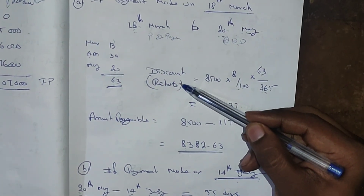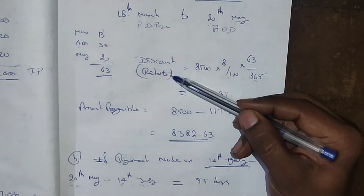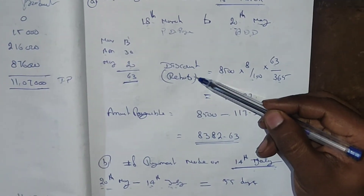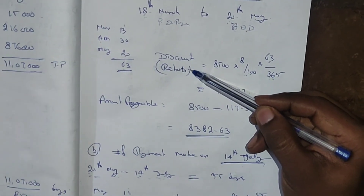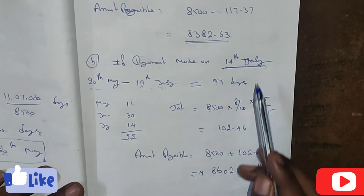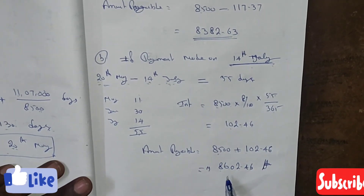To summarize: if you pay earlier than the Average Due Date you are eligible for a discount or rebate. If you are paying beyond the Average Due Date, then you have to pay interest.